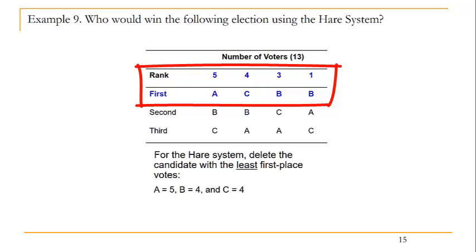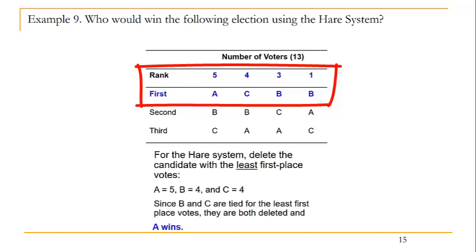Since candidates B and C are tied for the least number of first place votes, they're both deleted. Since candidate A is the only candidate remaining, candidate A would win this election.